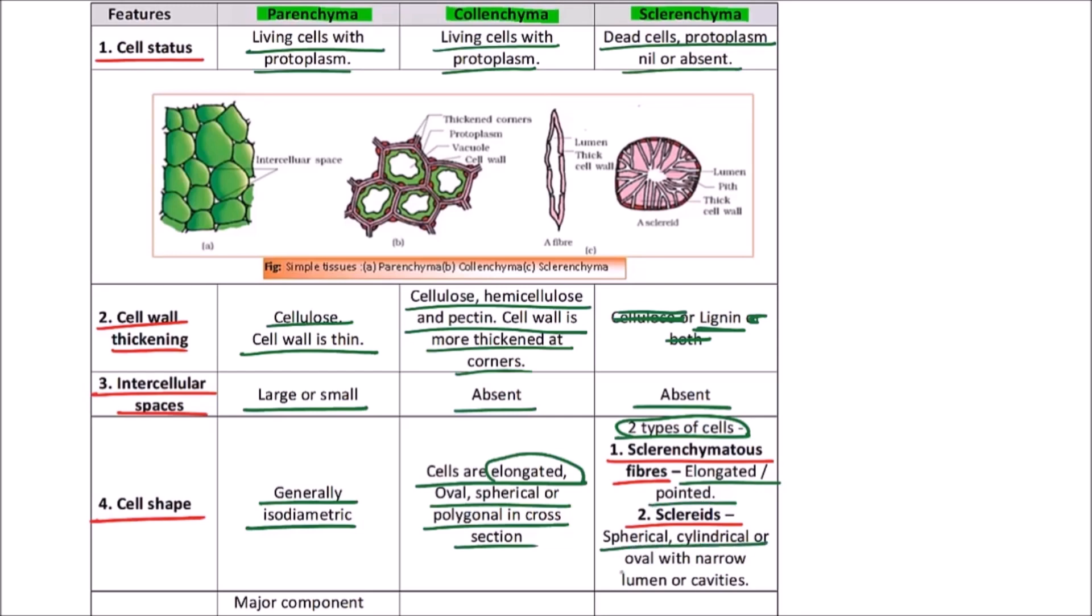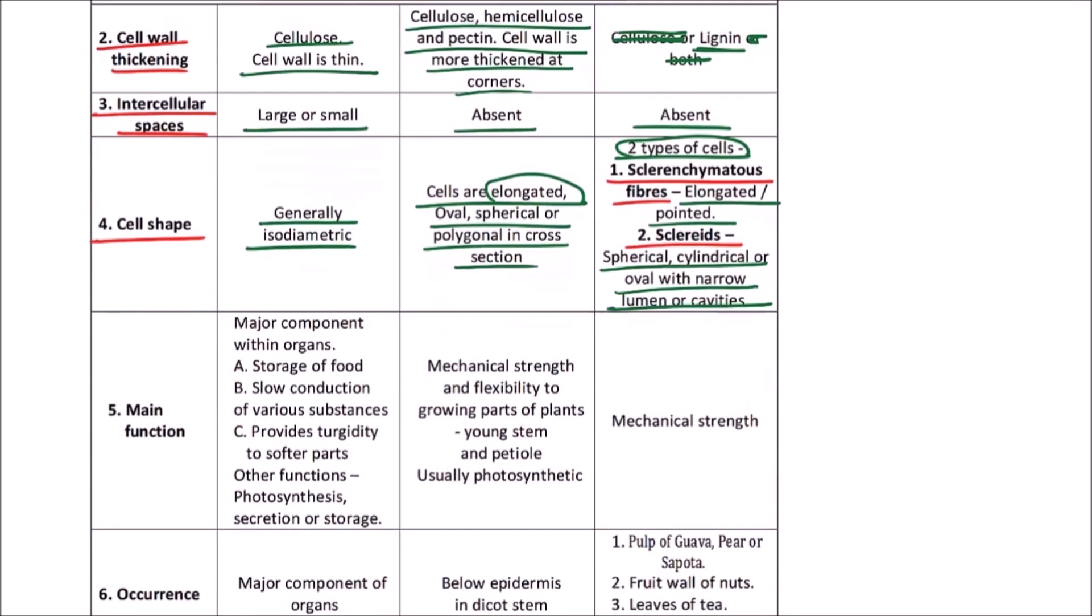Now what is the main function? Main function is that parenchyma forms the major component within organs and performs the functions like storage of food, slow conduction of various substances, provide turgidity to soft parts. Other functions include photosynthesis, as in case of chlorenchyma, secretion, or storage.